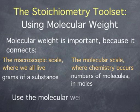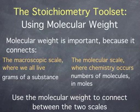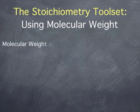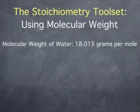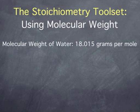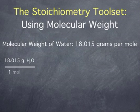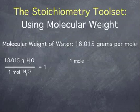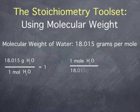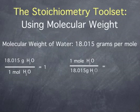To connect between the macroscopic and molecular scale, we use the molecular weight. For example, the molecular weight of water is 18.015 grams per mole. This gives us two ratios we can use for conversions between grams and moles. 18.015 grams water over one mole of water equals one. One mole of water over 18.015 grams water equals one.